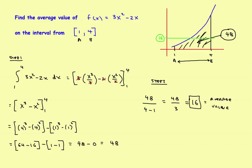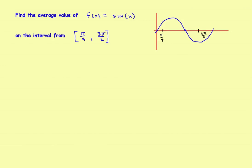Now let's look at a trig example. Find the average value of f of x equals sine of x on the interval from pi divided by four to three pi divided by two. Looking at the graph of the sine wave, the interval starts at pi over 4 and ends at 3π over 2. There's a positive area above the x-axis and a smaller negative area below. Since there's more above than below, the final answer should be positive.